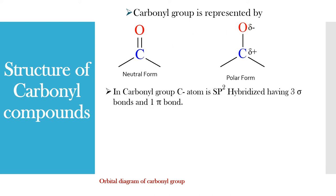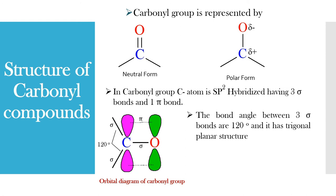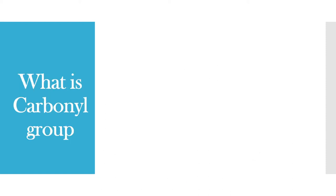In the carbonyl group, the carbon atom is sp2 hybridized, having three sigma bonds and one pi bond. This is the orbital diagram of the carbonyl group. As you see in this orbital diagram, the carbon is having three sigma bonds and one pi bond. The pi bond is formed by the overlap of empty p orbitals present on carbon and oxygen. The bond angle between the three sigma bonds is 120 degrees, and the carbonyl group has a trigonal planar structure.